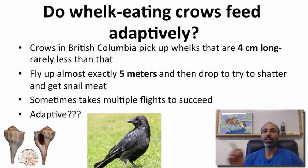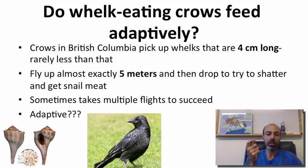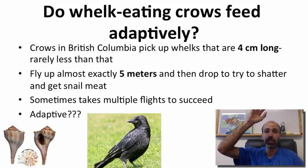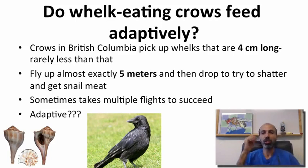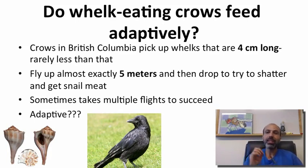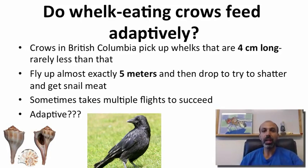Let's look at this in the context of whelk-eating crows. These are crows in British Columbia that pick up whelks on average about four centimeters long. They fly up into the air with the whelks and drop them — flying almost exactly five meters and then dropping them — to try to shatter the shell and get the snail meat out. Sometimes it takes a couple of flights. Is this adaptive? They could pick different size whelks, fly different heights, or fly more times. Let's look at how this might be adapted.